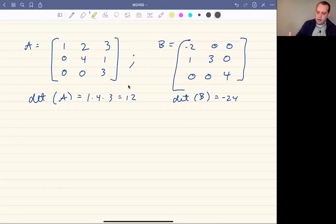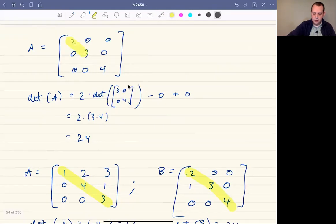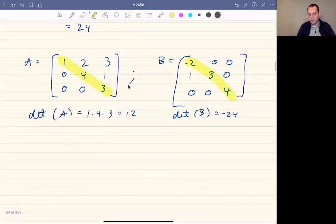So again, you can just take the product along the diagonal whenever you have a diagonal matrix or a triangular matrix. When I say triangular, I mean either lower triangular or upper triangular. In any case, if you have a triangular or diagonal matrix, just take the product of the terms on the main diagonal to get the determinant.